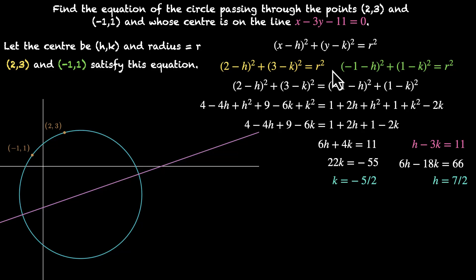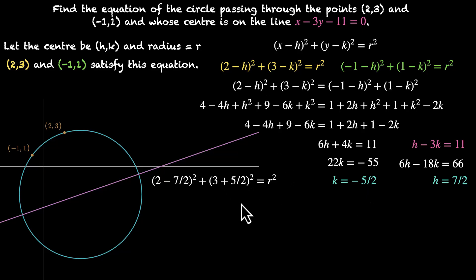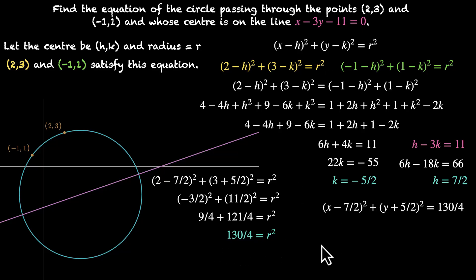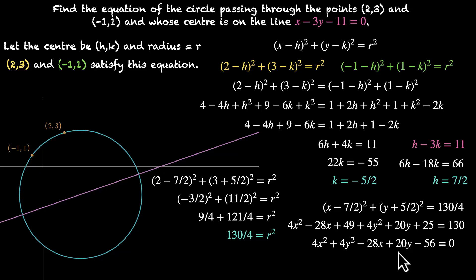Plugging the center into the first point equation to get the radius: 2 minus 7 by 2 squared plus 3 minus minus 5 by 2 squared equals r squared. This gives minus 3 by 2 squared plus 11 by 2 squared equals r squared, which is 9 by 4 plus 121 by 4 equals 130 by 4. The equation is x minus 7 by 2 squared plus y plus 5 by 2 squared equals 130 by 4. Expanded in standard form: x squared plus y squared minus 7x plus 5y minus 14 equals 0.